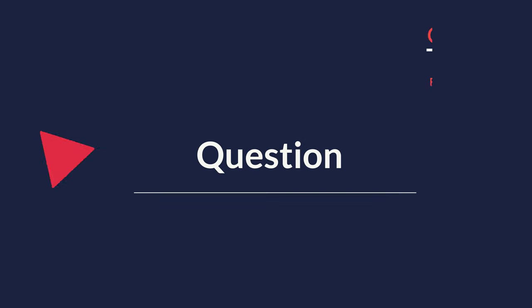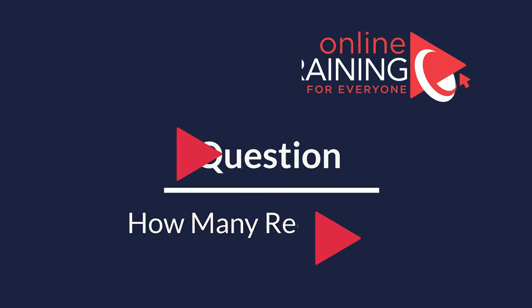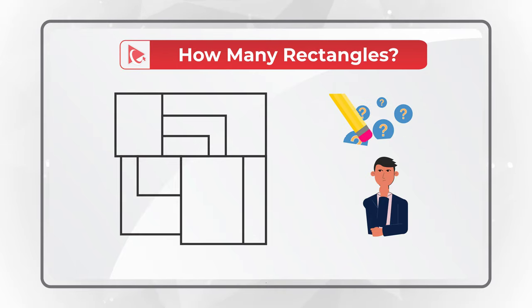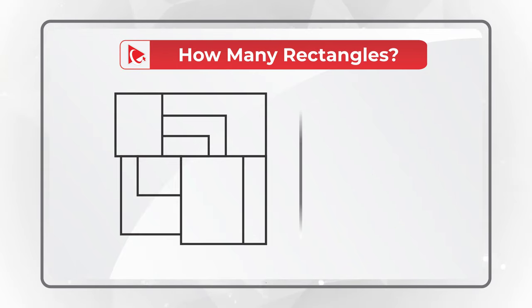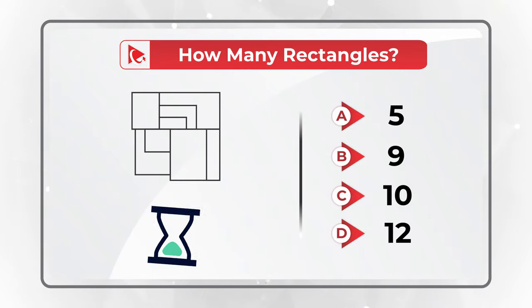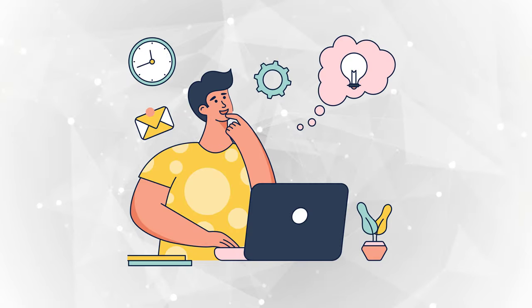Here's an amazing question to test your analytical brain power. You're presented with a shape and you need to determine how many rectangles are part of this shape. You have four different choices: choice A is 5, choice B is 9, choice C is 10, and choice D is 12. Give yourself a little bit of time — maybe pause this video to see if you can come up with the answer.